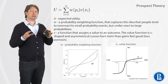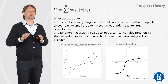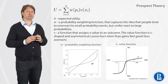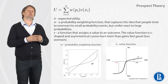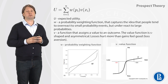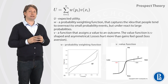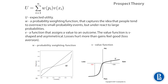At the same time, prospect theory suggests that values are processed by a value function that is highly asymmetrical. You can see here that the value function is much steeper for losses than for gains. It basically means that if you lose $50, it triggers much stronger pain than if you win $50. So importantly, prospect theory suggests that both probabilities and values are subjective, and they are processed during decision-making using the probability weighting function and the value function.